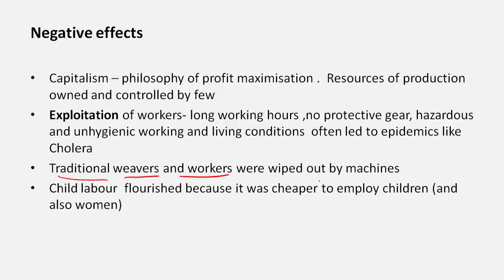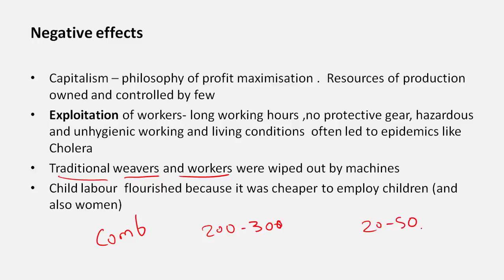Traditional weavers and workers were wiped out by machines because machine-produced goods were much cheaper. For example, in India there was a tradition of building wooden combs — handmade wooden combs cost 200 to 300 rupees, but a plastic comb costs 20 to 50 rupees. When machine-manufactured goods came to India, traditional handicraft workers were devastated. This happened with each and every industry, not just one example.